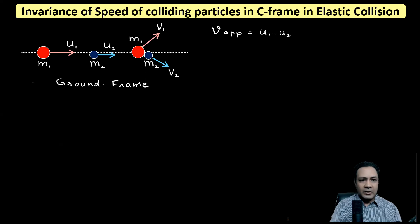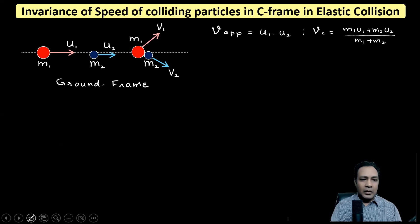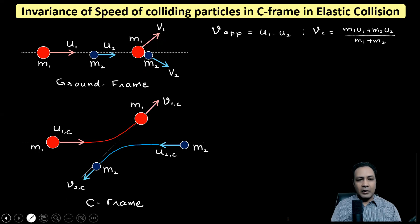The velocity of the center of mass is vc = (m1·u1 + m2·u2) / (m1 + m2). After collision, the individual particles have velocities v1 and v2 as you can see. When we look at this whole picture in the C frame, the picture looks something like what I'll explain now.